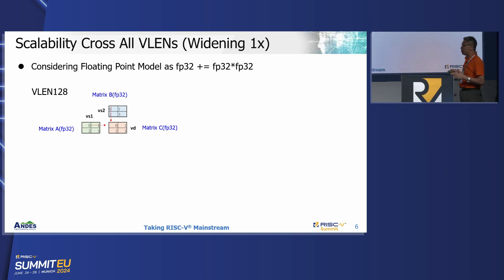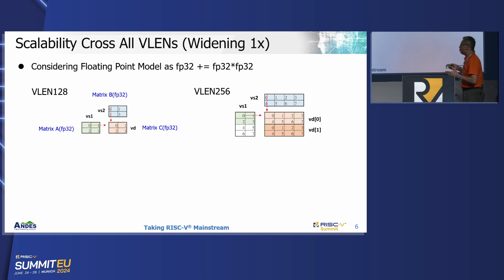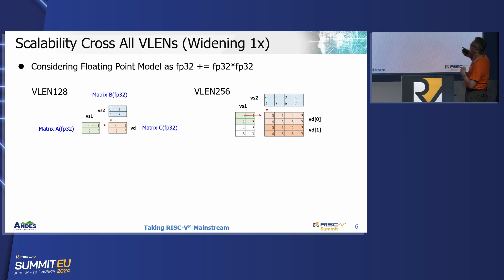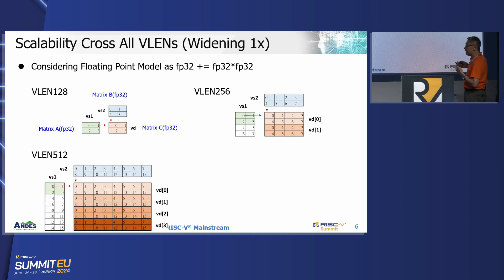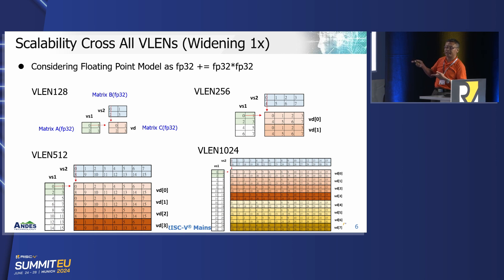More explicitly, it's quite common to find a matrix multiplication configuration at VLEN 128 arranged this way. With this instruction set idea, you can easily scale up for longer VLEN — as shown here at VLEN 256 — and the same idea applies for VLEN 512, 1024, and beyond. This concept applies uniformly for longer VLEN as shown in this slide.